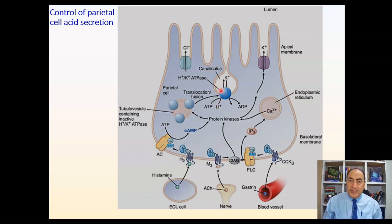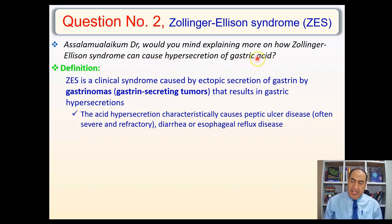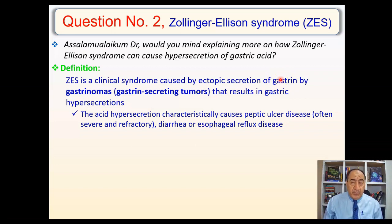I hope this part is clear. Question number two: can you explain more on how Zollinger-Ellison syndrome can cause hypersecretion of gastric acid? Zollinger-Ellison syndrome is a clinical syndrome caused by ectopic secretion of gastrin. Gastrin is a hormone usually produced by the G-cells in the antrum of the stomach, but here it's produced ectopically — it's actually a tumor.